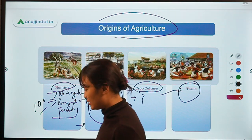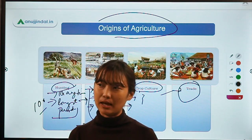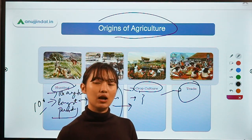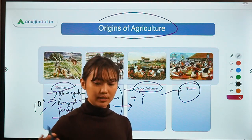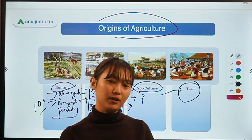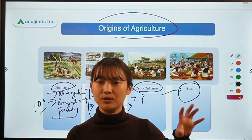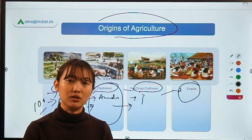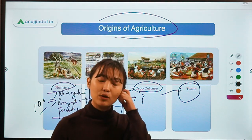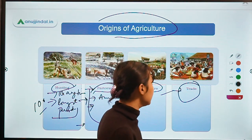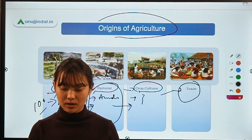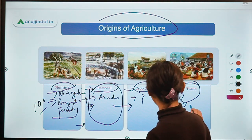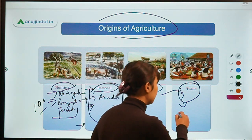Then comes the trade era. They realized there was an excess of food. Person A might be growing rice and person B would be growing wheat, so they would start exchanging those food products — that's how the barter system started. Then money flow also started, industrialization started, and people became more economically aware. This is how the whole origin of agriculture and commercialization began.